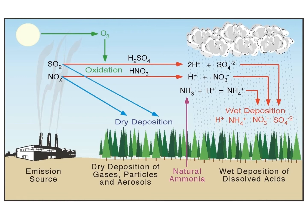A graphic displays the process involved. Sulfur dioxide and nitrous oxides come primarily from the burning of coal and oil. They become oxidized, which leads to them being converted into acidic precipitation or acidic deposition. Sulfur dioxide and nitrous oxides can also be dry deposited to the Earth's surface, and if they mix with water, they form acids. Natural ammonia released from nature can also react to form a type of acidic compound.